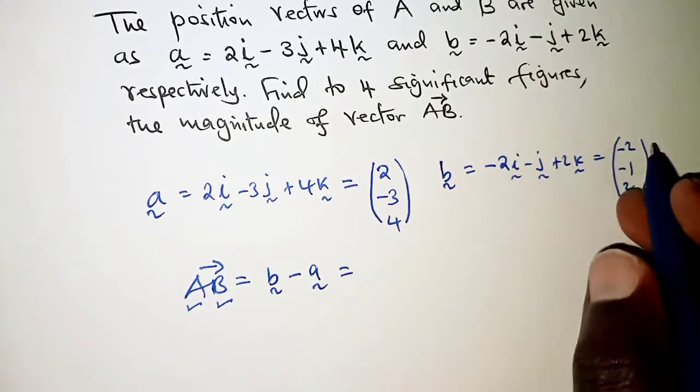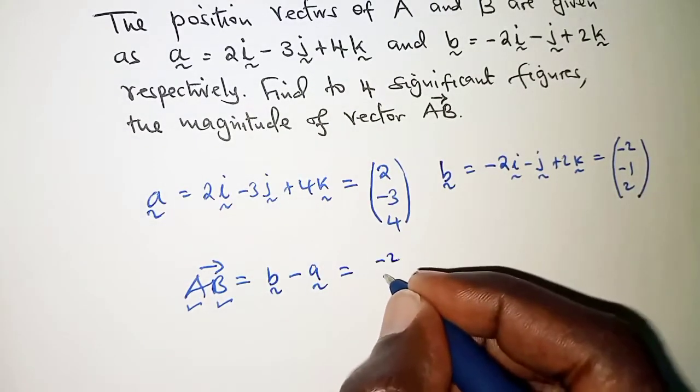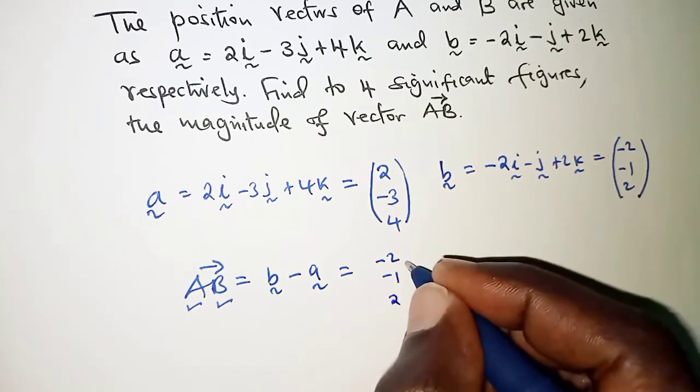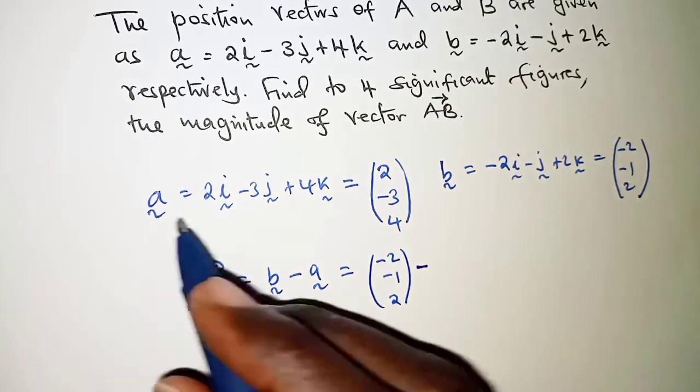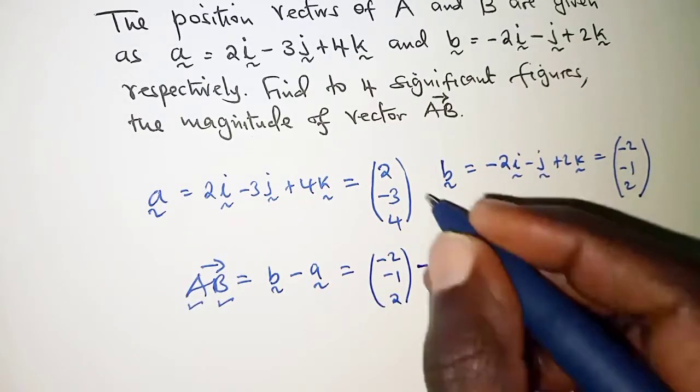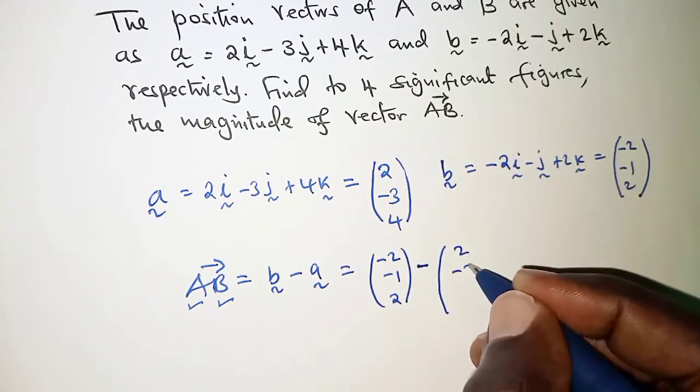We obtain this by having (-2, -1, 2) minus A. For A we have (2, -3, 4).